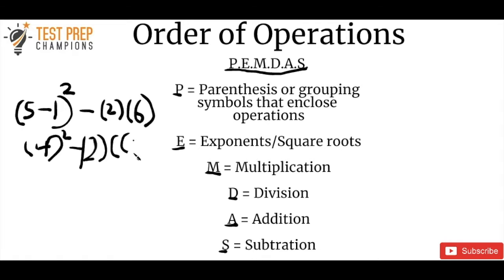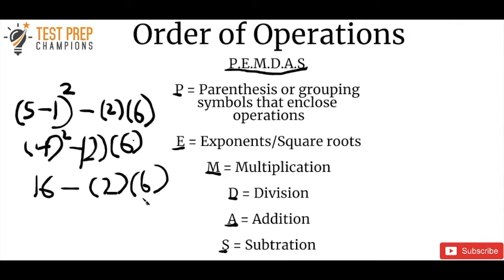Next we tackle the exponent: 4 squared is 4 times 4, which is 16. Rewriting gives us 16 minus 2 times 6. Now, do we do 16 minus 2 first, or 2 times 6? According to PEMDAS, multiplication comes before subtraction, so we do 2 times 6 first, which is 12. Therefore 16 minus 12 equals 4.